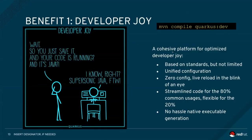It's based on standards but not limited to standards — the frameworks and third-party libraries that developers love to use are still supported in Quarkus. Quarkus has unified configuration and streamlines the code for 80% of common use cases, while still being flexible for the remaining 20%. It also offers no-hassle native executable generation.